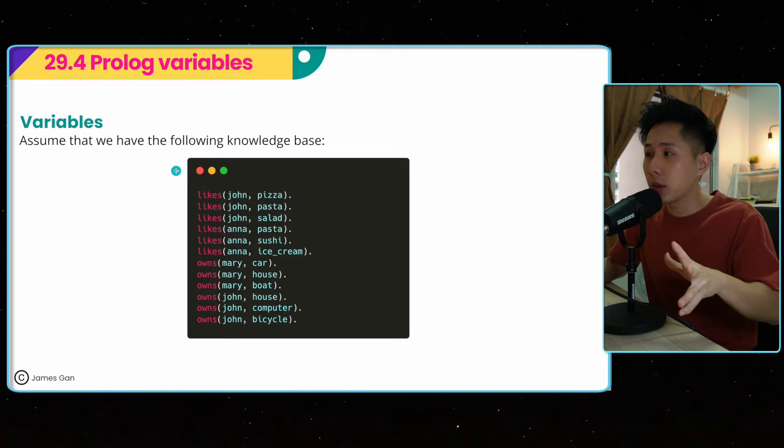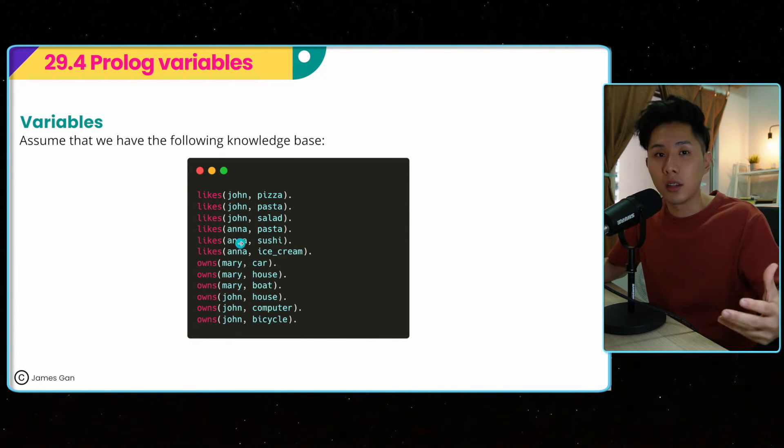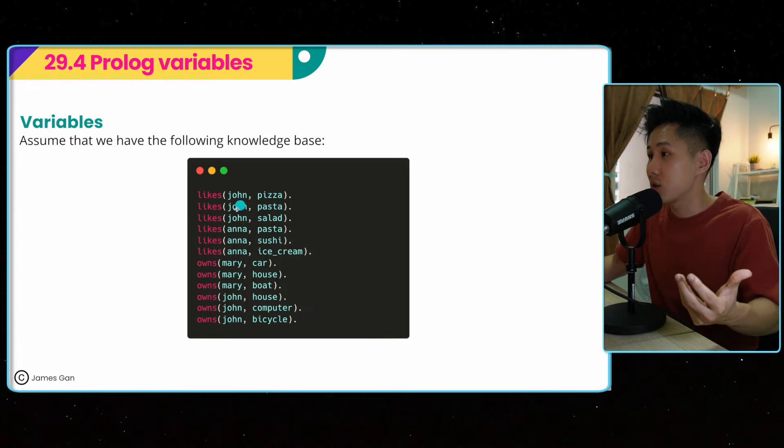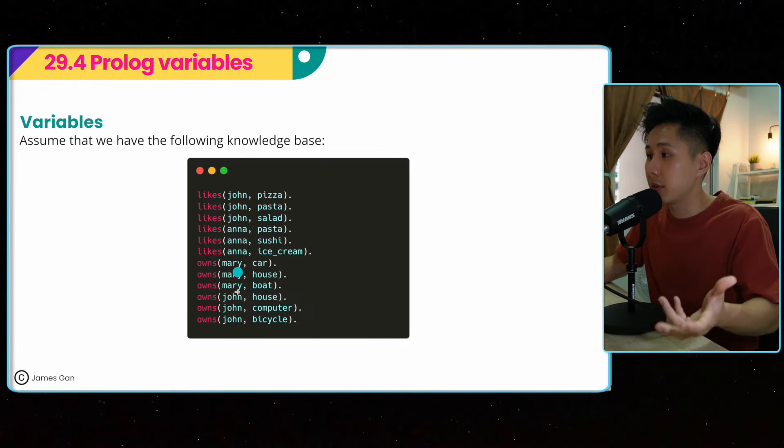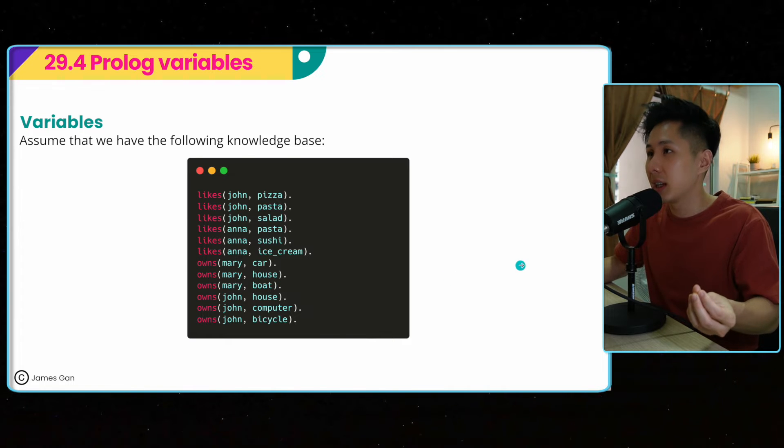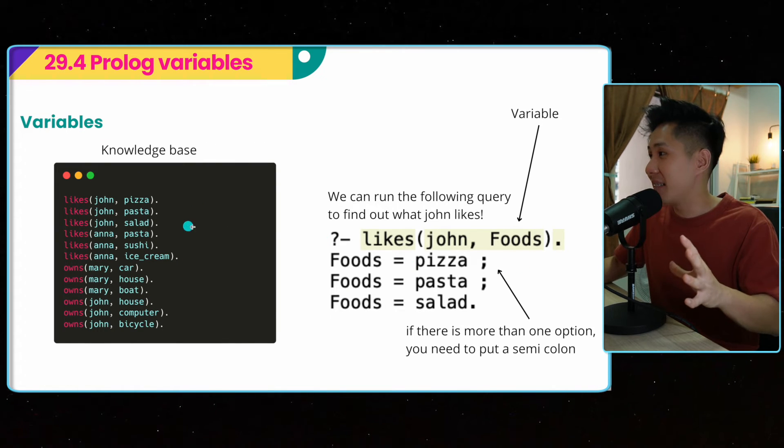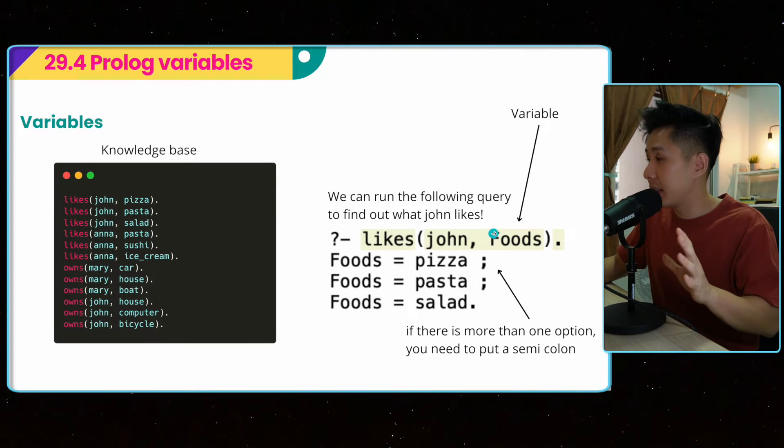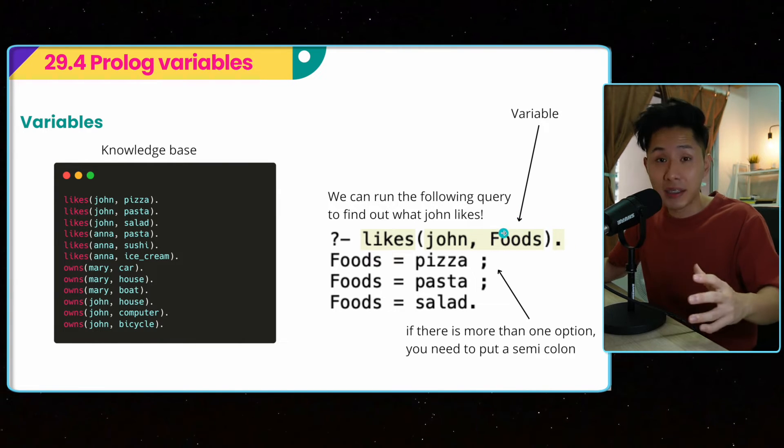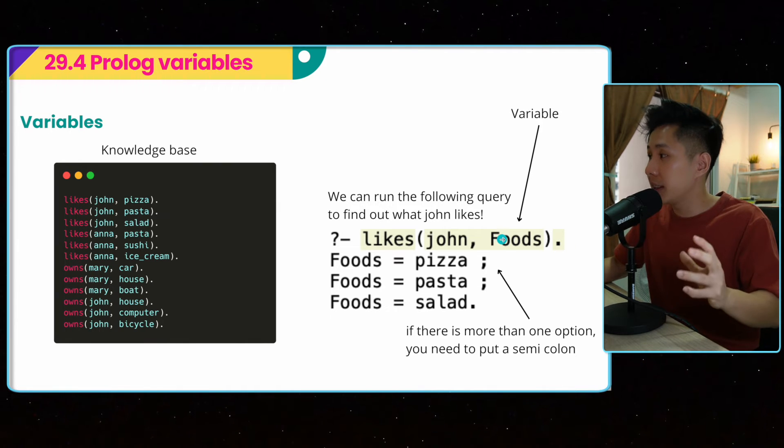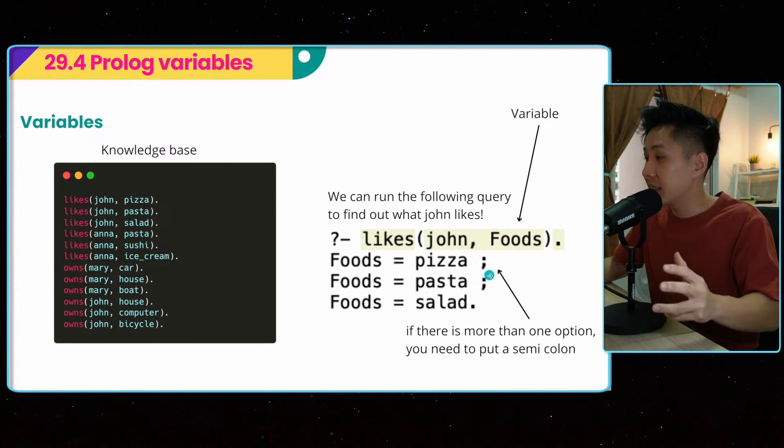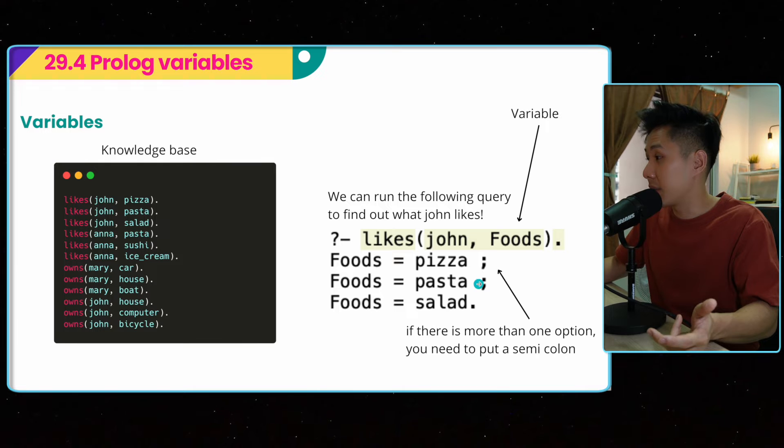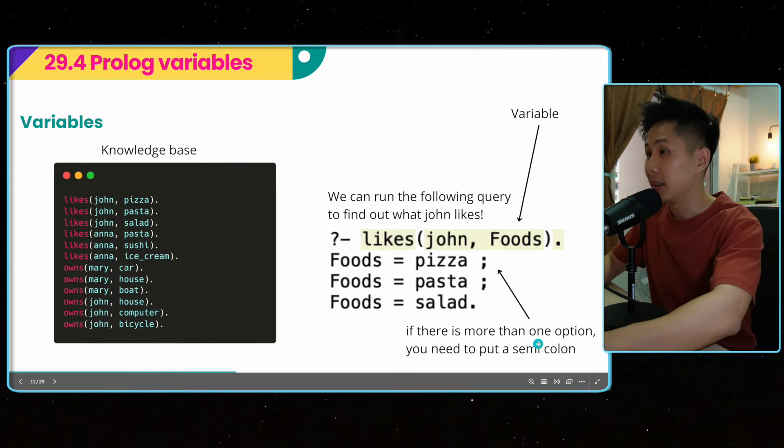And next up, another thing about Prolog is term variable. Assuming that now we have this knowledge base. And I just create a predicate like, and this predicate stands for John likes pizza, John likes pasta, John likes salad, similarly goes to Anna, Mary, and another John, and what it owns. So knowledge base. And we can run the following query to find out what John likes by using a variable. So do know that this is known as variable because all the variables need to be capitalized. So when Prolog sees a capitalized word, it immediately knows that food is a variable.